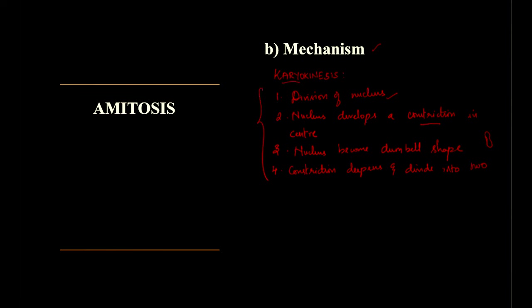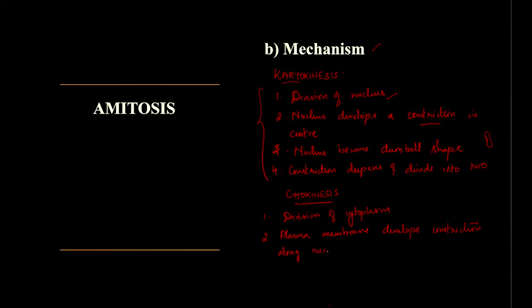The second step is cytokinesis, which is the division of cytoplasm. Here the plasma membrane plays a very important role — the constriction will be started by the plasma membrane, which develops a constriction along the nuclear constriction and deepens centripetally, meaning in the direction towards the center.